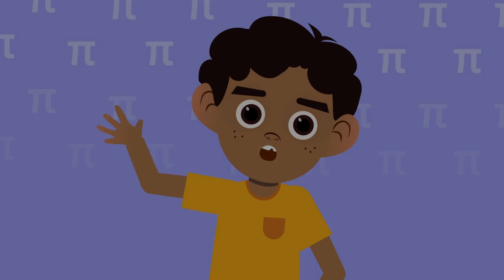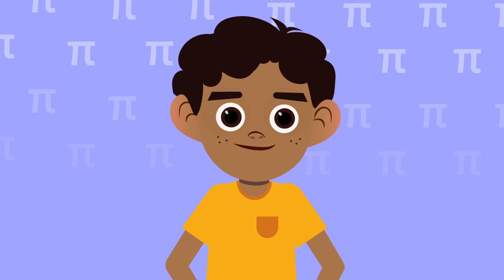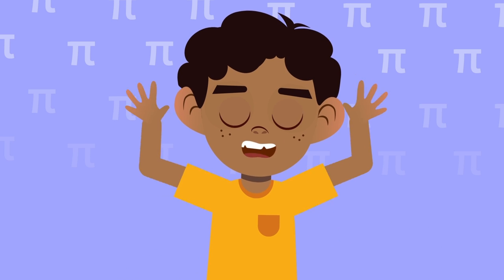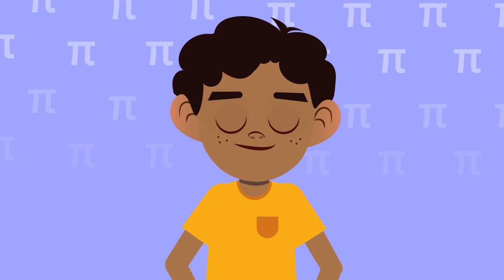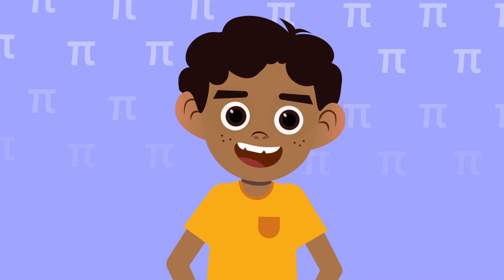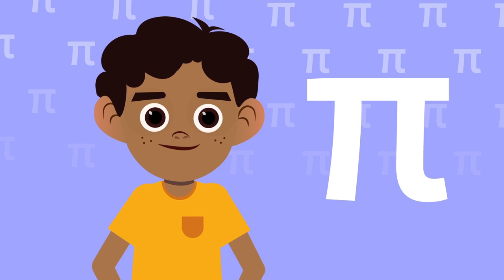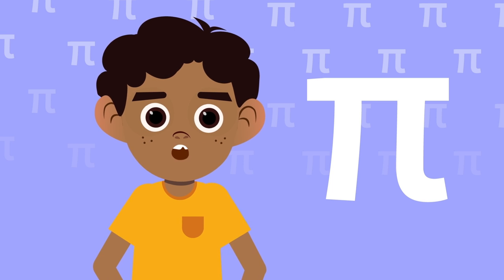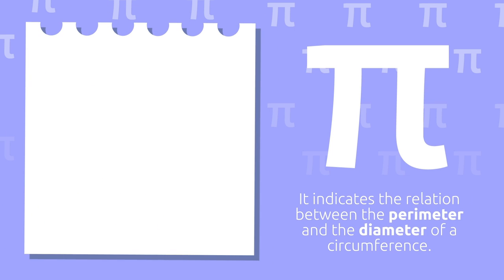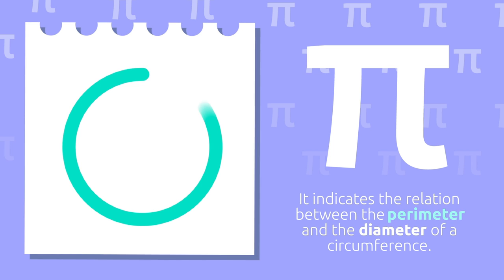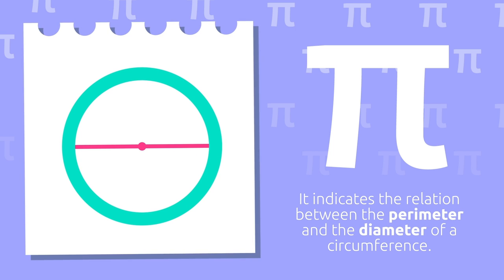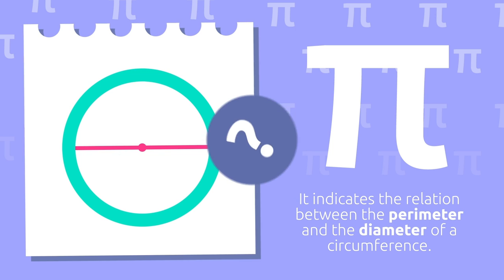Hello friends! Today we'd like to introduce a very famous number found in all circumferences and circles you see around you — it's number pi. Number pi is a mathematical constant which indicates the relation between the perimeter and the diameter of a circumference. But how can we describe this relation?